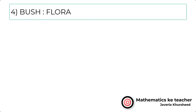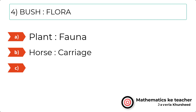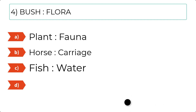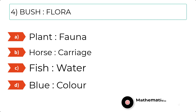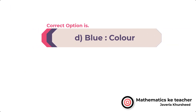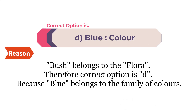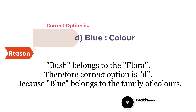Question 4: Bush, Flora. A. Plant, Fauna. B. Horse, Carriage. C. Fish, Water. D. Blue, Colour. The correct option is D — Blue, Colour. Since a bush belongs to the flora, therefore the correct option is D, because Blue belongs to the family of colors.